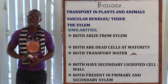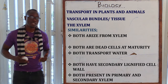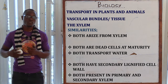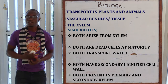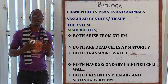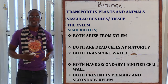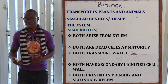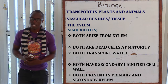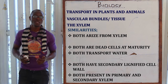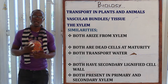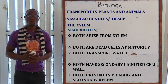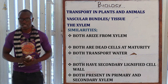Similarities between vessels and tracheids: both arise from and are part of the xylem. Both are dead cells at maturity. Both transport water and mineral ions. Both have secondary lignified cell walls for support. Both are found in primary and secondary xylem.